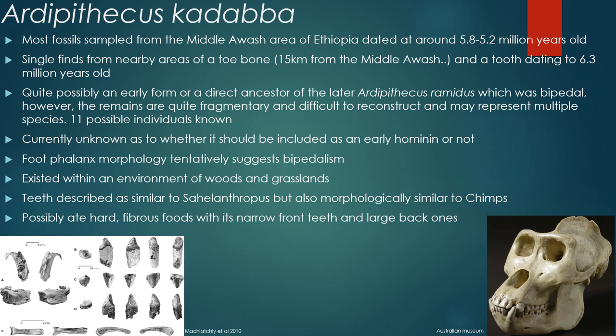It is currently unknown whether Ardipithecus kadabba should be classified as an early hominin. Foot phalanx morphology tends to suggest bipedalism, but that would require confirming the phalanx came from a single species. It existed within an environment of woods and grassland, very similar to Sahelanthropus, and may have lived both in trees and on the grassland. It possibly ate hard fibrous foods, as indicated by narrow front teeth and large back ones for chewing.